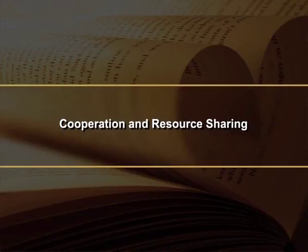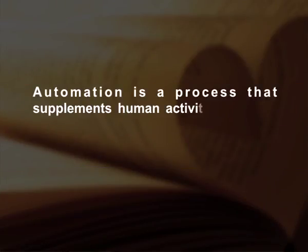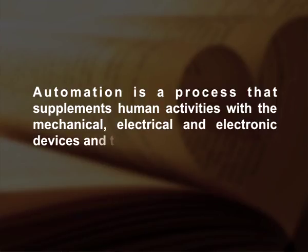Greater efficiency: the workflow in the library may be made more rapid, more systematic and efficient with the help of computers. Records in computerized form are more accurate, reliable and more accessible than manually prepared records. All sorts of housekeeping jobs and information work can be performed efficiently. Cooperation and resource sharing: no single institution can collect or organize all documents available all over the world, even in a specific field, nor in interdisciplinary and multidisciplinary subjects. Automation supplements human effort with mechanical, electrical and electronic devices and technologies.